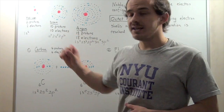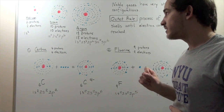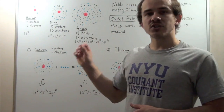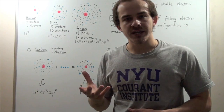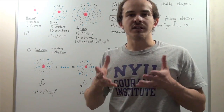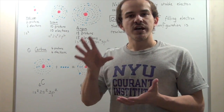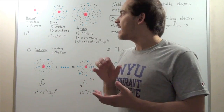Let's look at Helium, Neon, and Argon. The electron configuration is simply the layout of the electrons found within that atom.